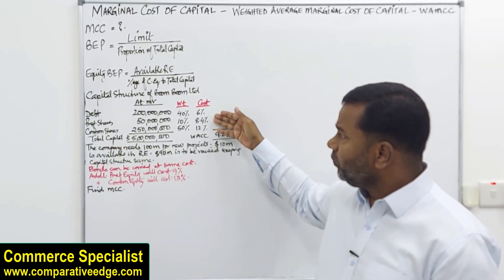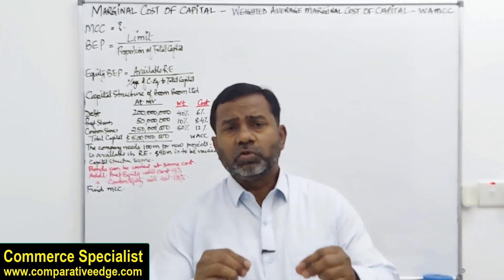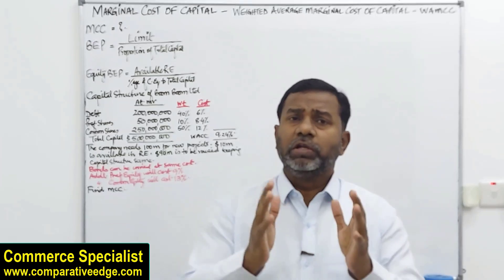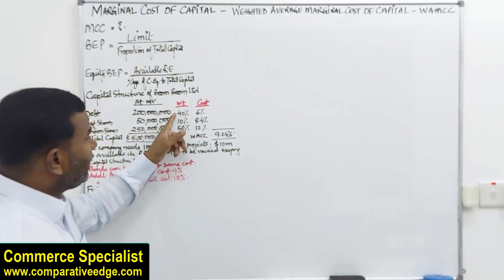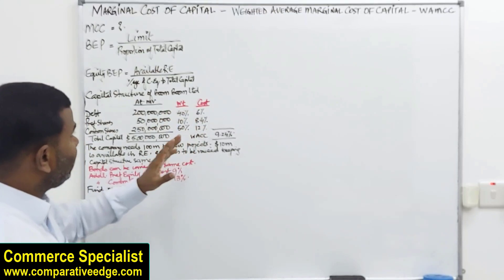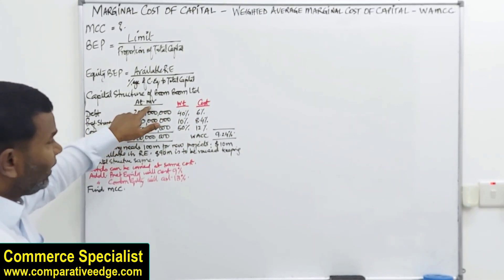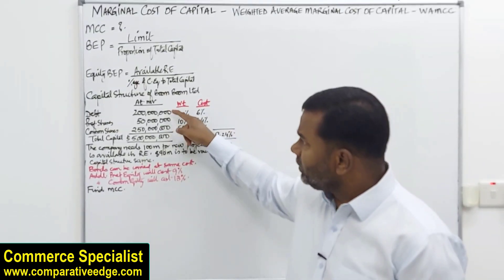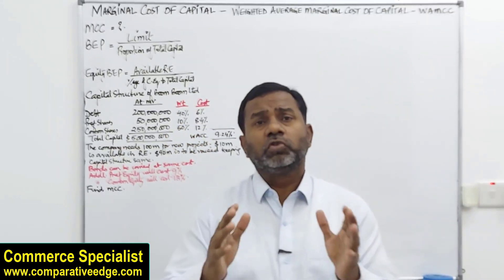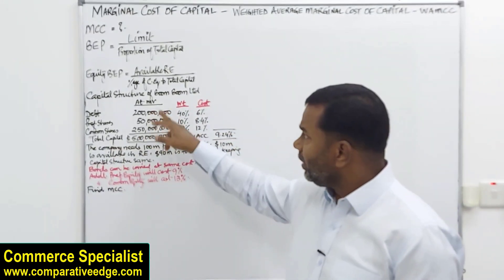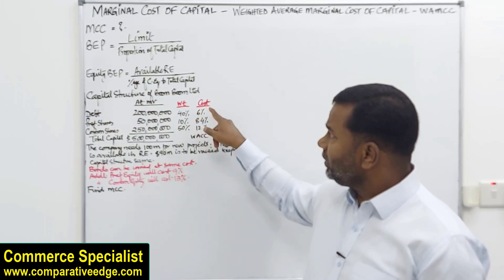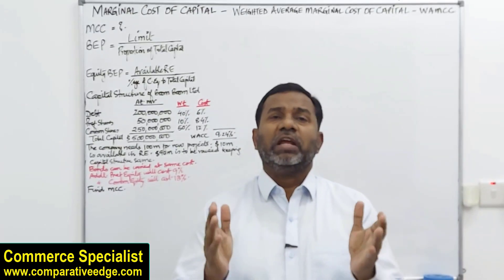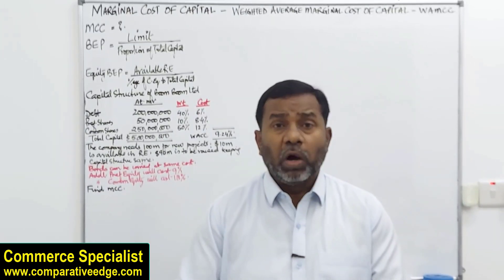The cost of capital is already given: debt is 6%, preference equity is 8.4%, and common shares are 12%. For a quick recap of weighted average cost of capital: multiply each weight by its respective cost of capital — remember these values should be at market value. When you multiply and add all of them, you get a weighted average cost of capital of 9.24%.